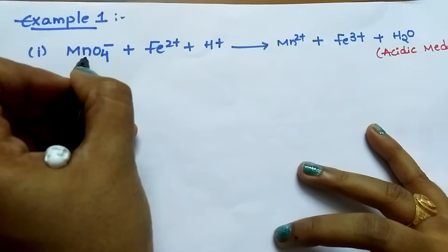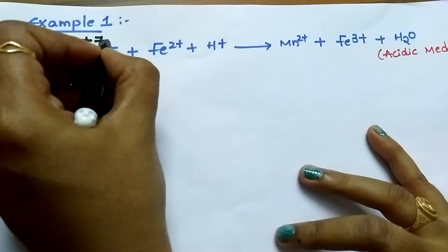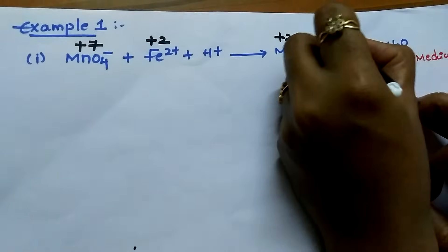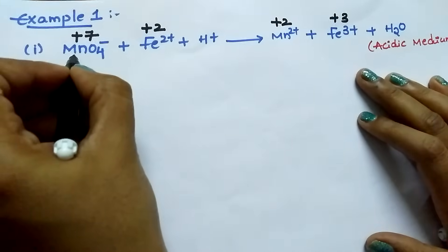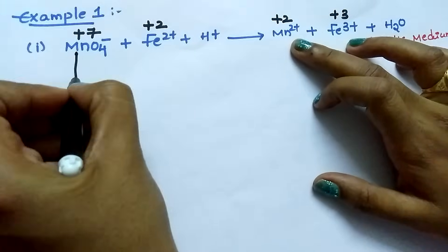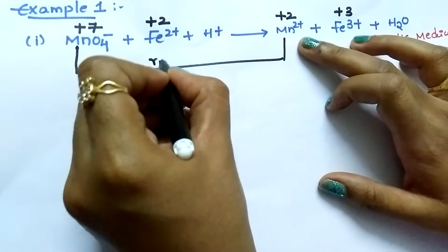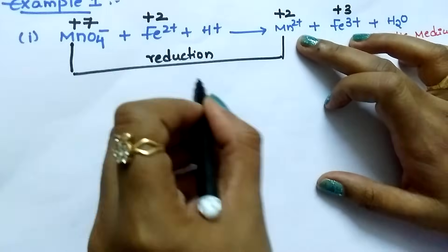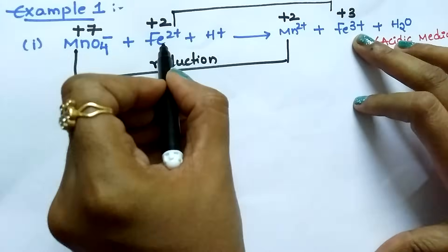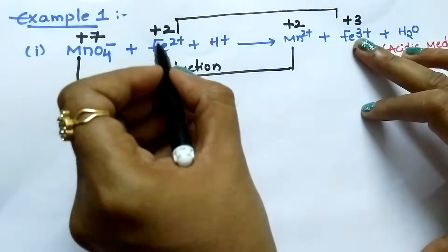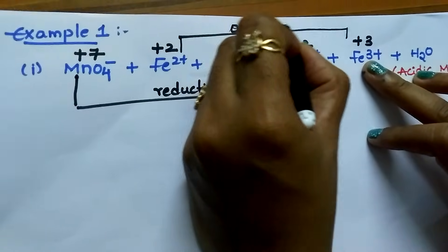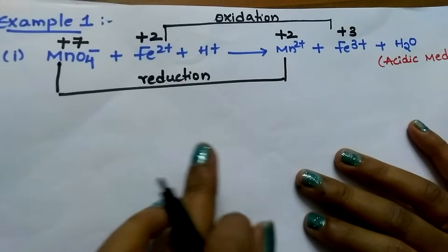The oxidation state of manganese in MnO₄⁻ is +7. It is +2 in Fe²⁺, and here it is +2, and here it is +3. Manganese is changing its oxidation state from +7 to +2 — the decrease in oxidation number, we call it reduction. Fe²⁺ is changed into Fe³⁺, meaning the oxidation state changes from +2 to +3. The increase in oxidation number, we call it oxidation.